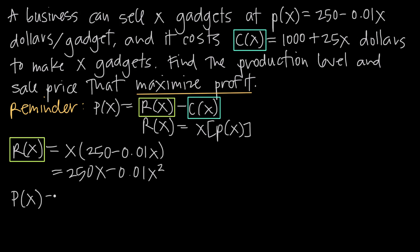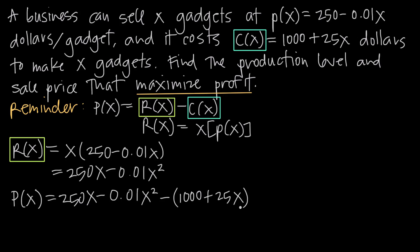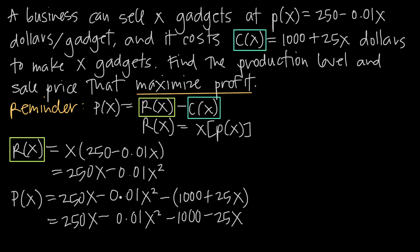Our profit function P(x) equals revenue minus cost: (250x minus 0.01x²) minus (1,000 plus 25x). We have to be careful to distribute the negative sign across everything in the cost function. Doing so gives us 250x minus 0.01x² minus 1,000 minus 25x. Combining like terms and reordering, we get P(x) = negative 0.01x² plus 225x minus 1,000.